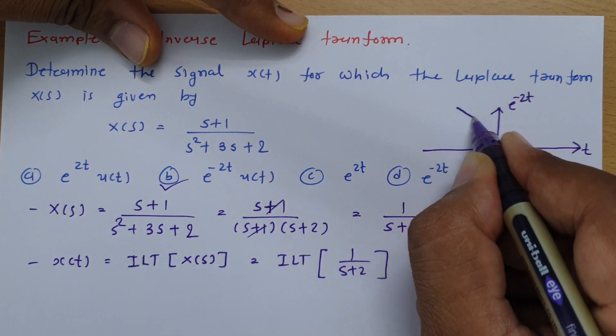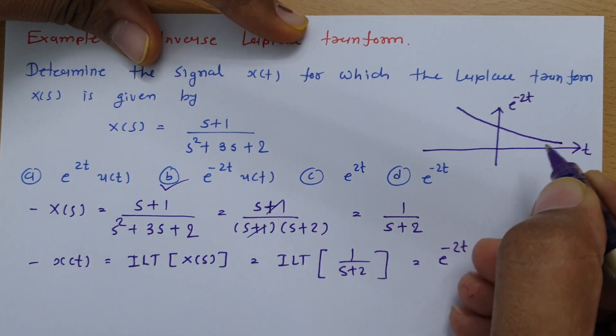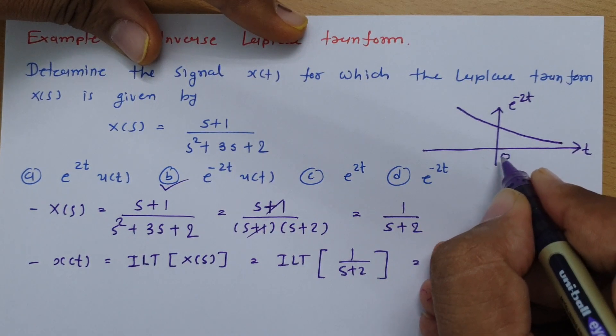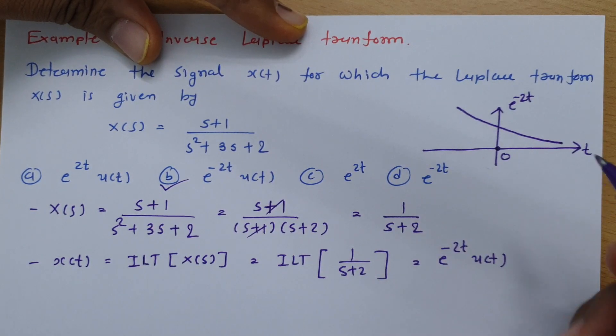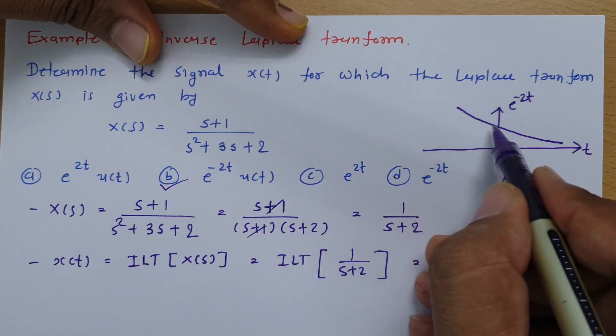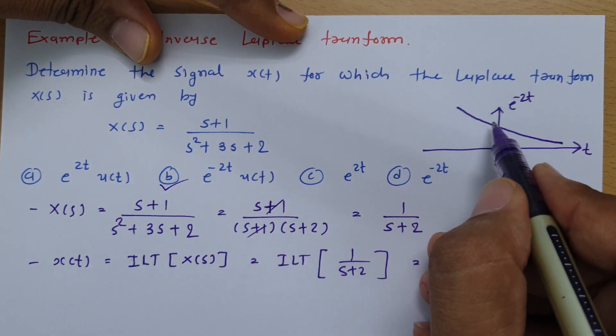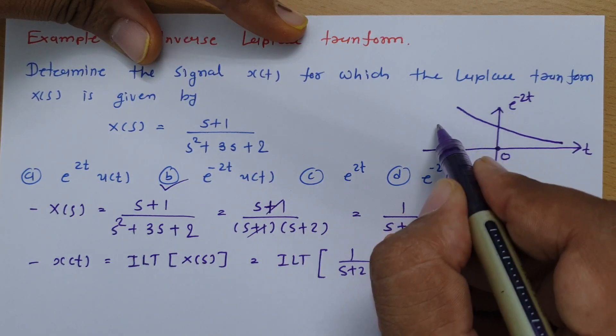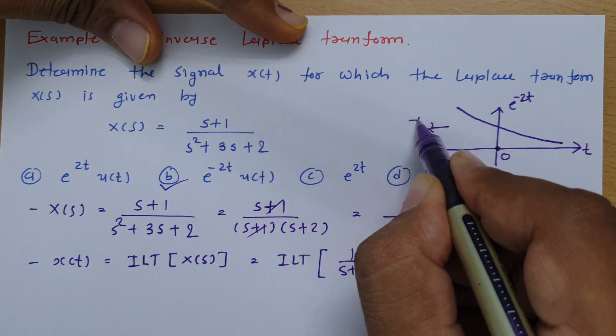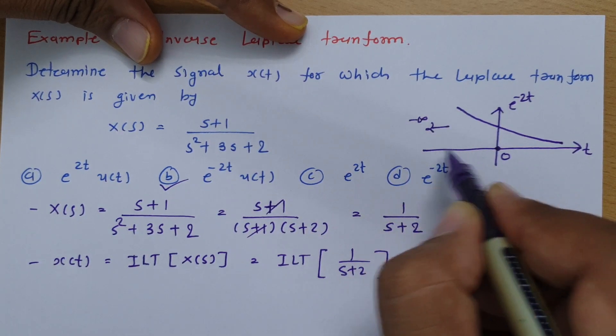Then it is like this, right? Now here time t=0 is there. Now see this is actually going towards infinity as you go towards minus infinite time.